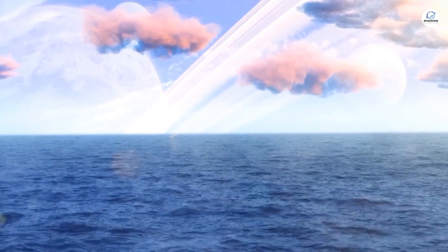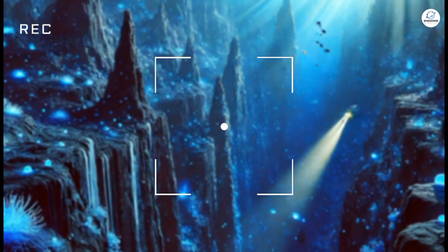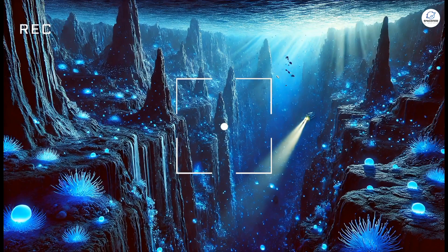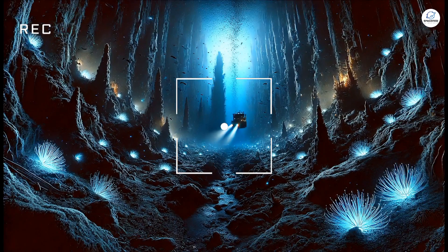GJ 1214b's waters are under immense pressure, with depths reaching up to 1,600 kilometers. To put that in perspective, the Mariana Trench, the deepest part of Earth's oceans, is just 11 kilometers deep.